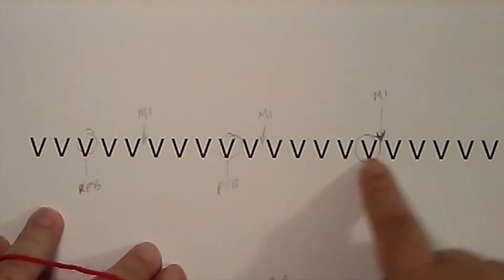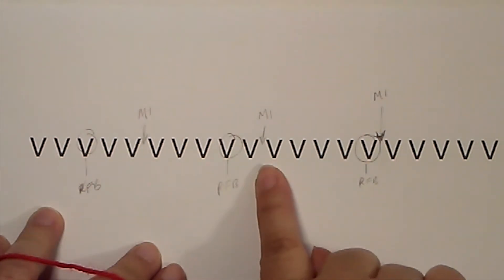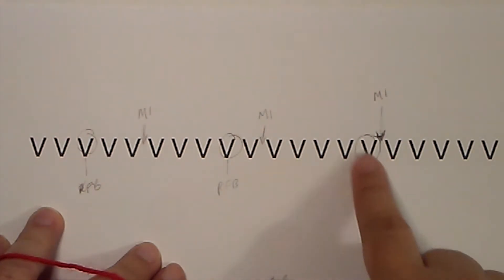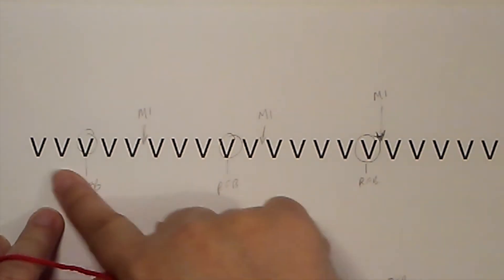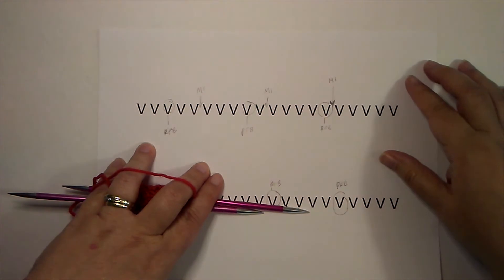That PFB is worked into a stitch and not between the stitches like a make one is, so when you're working into that stitch, it actually offsets that pattern.